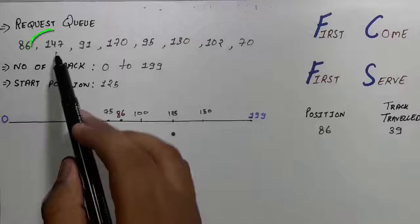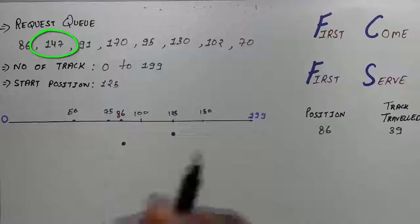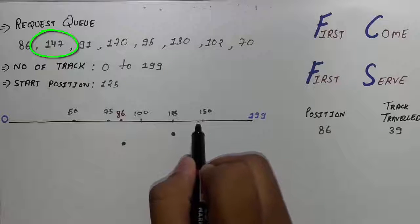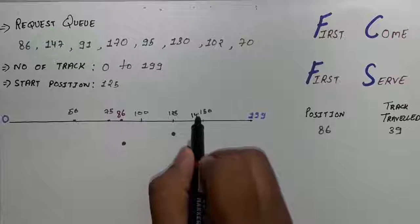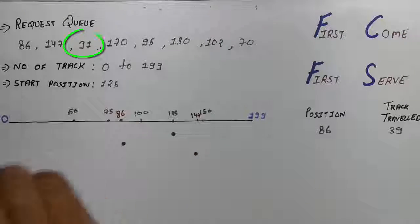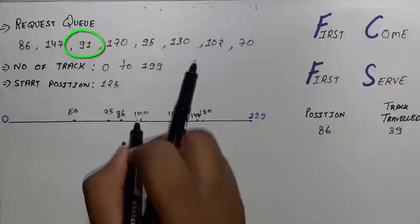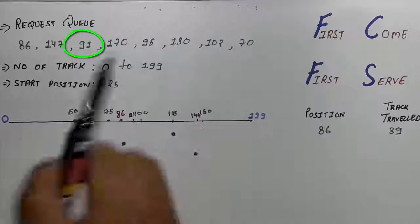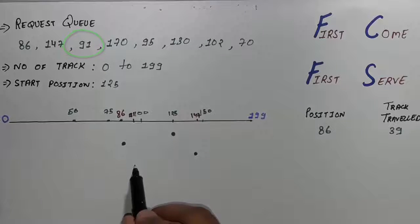Then you can see our next track is 147. So the 147 should be somewhere just before the 150. So write 147 here and then move the header here. Then the next request is 91. So 91 should be somewhere here. So write 91 here and below this. So make the circle here.